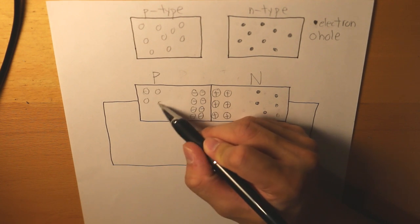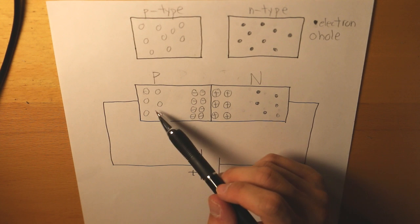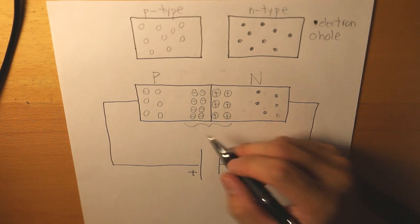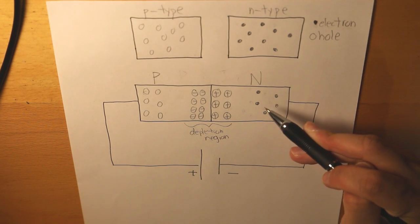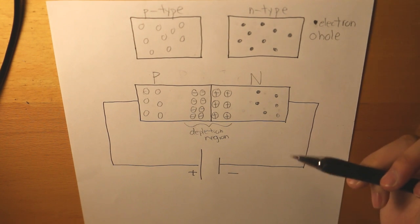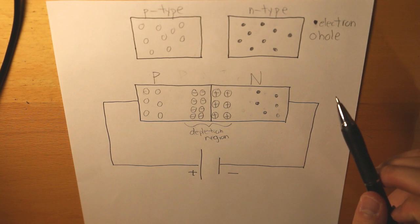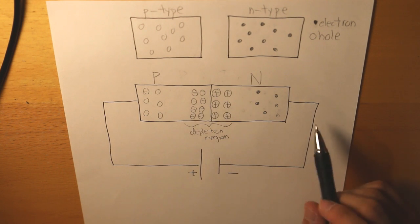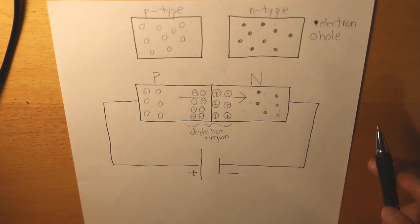So the electrons are traveling to fill in these holes. This creates a region called the depletion region. Since there is such a transfer of electrons, a current is induced in a particular direction — and that current travels in the direction that opposes the electrons. In this case, the current is traveling to the right.